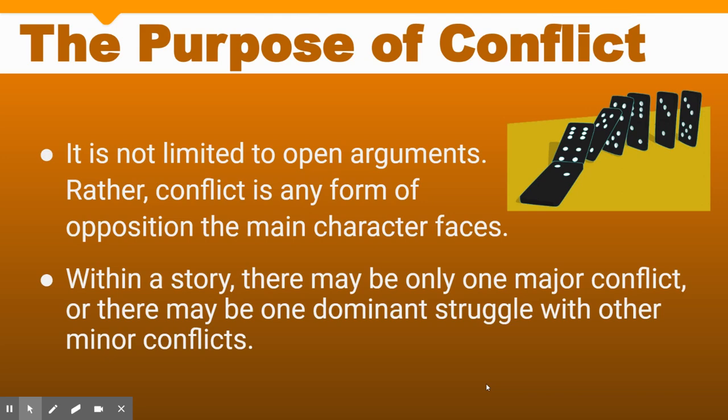Conflicts are not limited to fist fights and big open arguments. Conflict can be any form of opposition that the main character faces. Some are going to be resolved very clearly by the end of the story with a happy ending. Other times, authors might leave the conflict big and vague — making it bigger than the story. A good question to ask yourself is: why would the author leave it unresolved? Are they trying to make commentary on how some conflicts are just unresolvable?